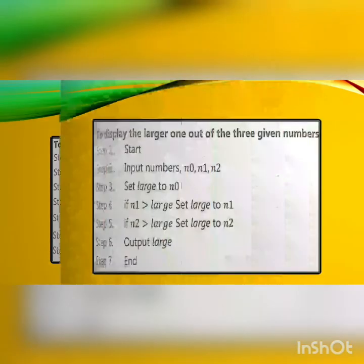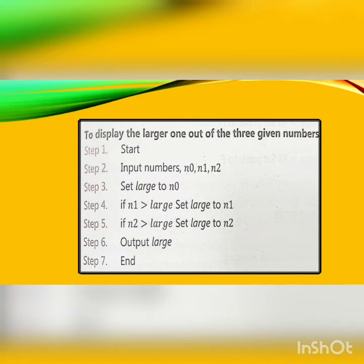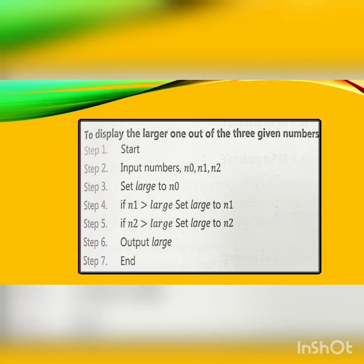Step 7 is the ending of this algorithm. Example 2 is to display the larger one out of three given numbers. You start, then input the numbers, then set your numbers, then put a condition using if/else to check which is smaller or larger. Step 6 involves the output, and then the ending. The keywords — start, input, set, if, else, go to, output, and stop — all play a very important role in these steps.